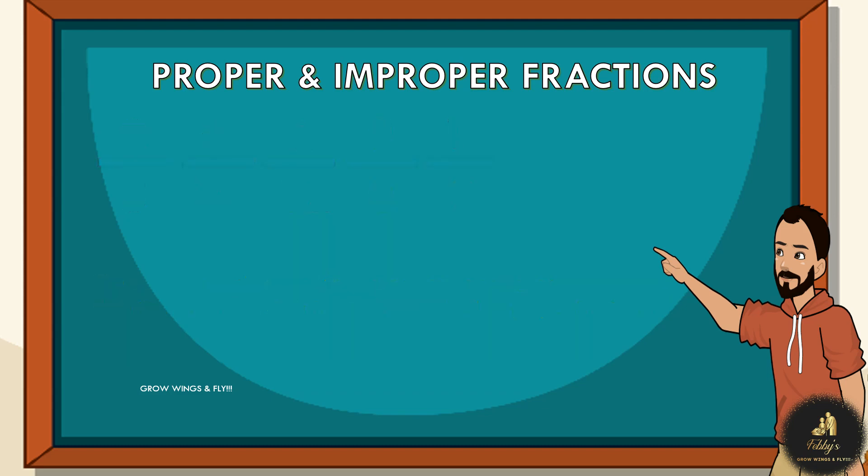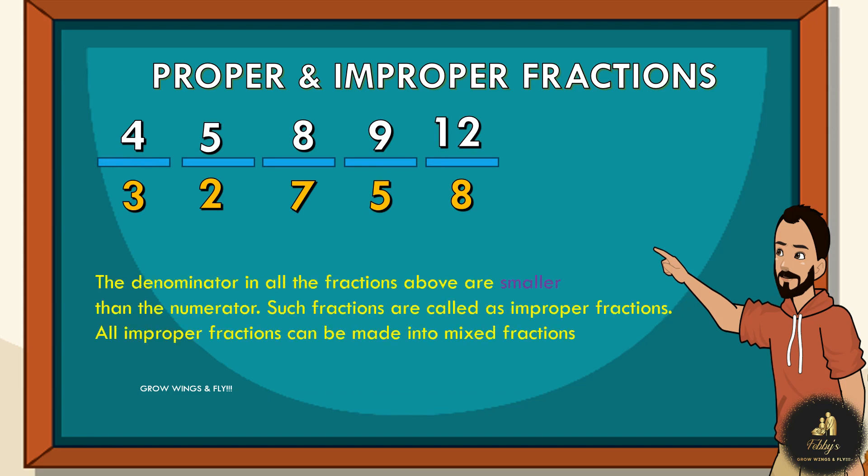So, if I were to give you another set of fractions, have a look. All these fractions have something in common. The denominators are smaller than the numerator. Such fractions are called improper fractions. So, higher the denominator, they are proper fractions. Lower the denominator, they are improper fractions.